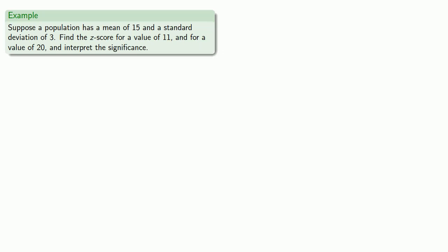For example, suppose a population has a mean of 15 and a standard deviation of 3, find the z-score for a value of 11 and for a value of 20, and interpret the significance.